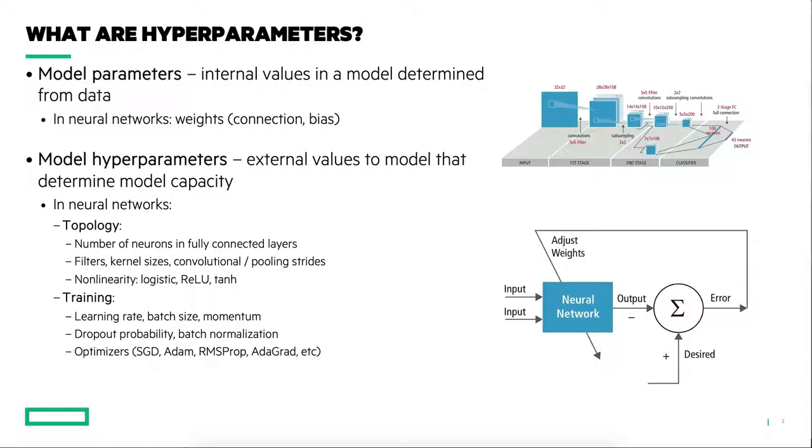When you think about machine learning models, there's a couple types of parameters to consider. First, you have your model parameters. These are the internal values of the models, like weights in a neural network, that you learn by training your model against a dataset. The other type of parameter that we're interested in is the external values, the hyperparameters to the model that determine the capacity of the model to learn and how the model learns.